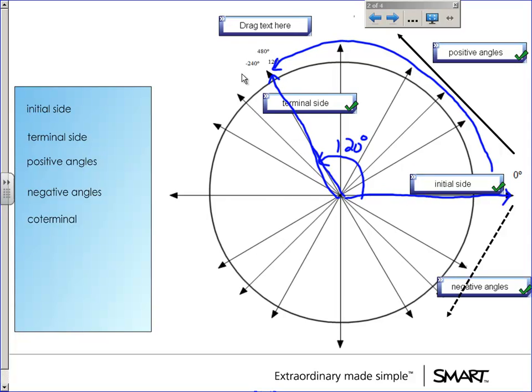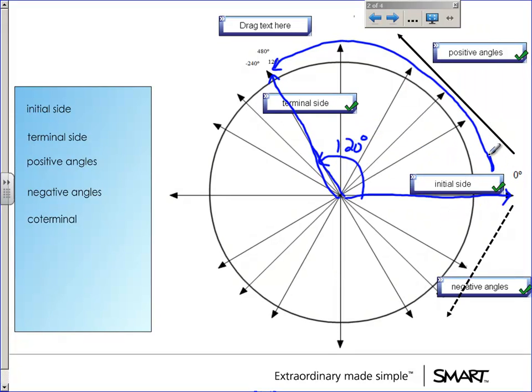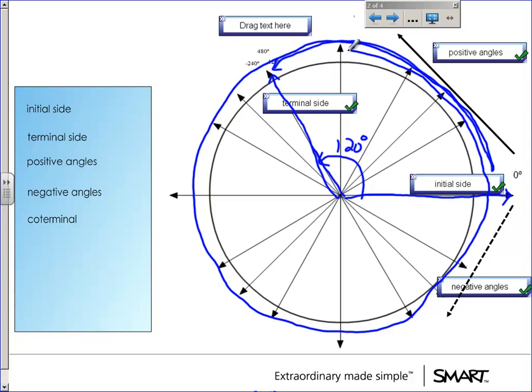So I want you to look at these other numbers here. These other numbers are negative 240 and 480. I want you to imagine, what if I started on the positive x-axis and I started rotating. And I went all the way around the circle. Now we all know that that's 360 degrees to go all the way around the circle. But what if I kept going? I went all the way around and then I went around again. And let's say I stopped right here.